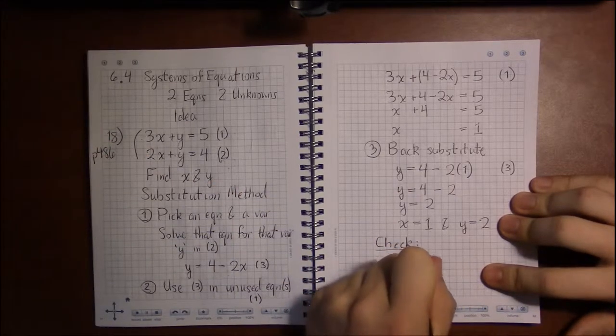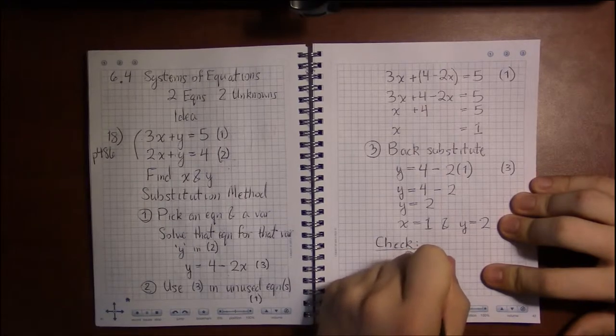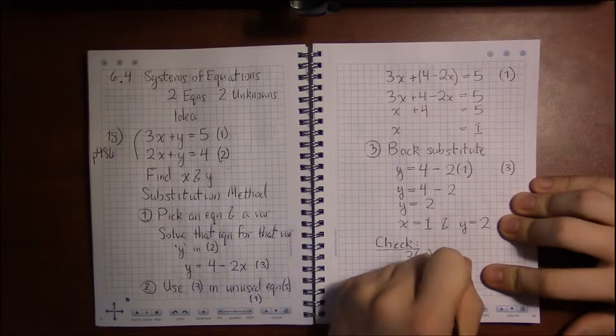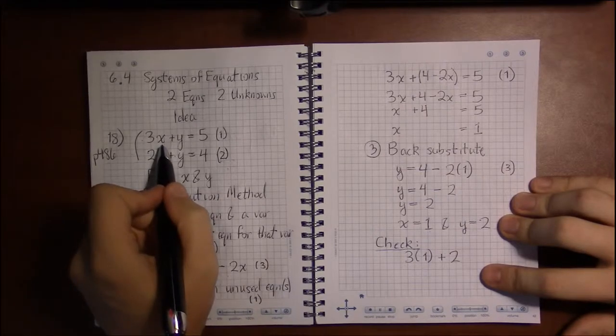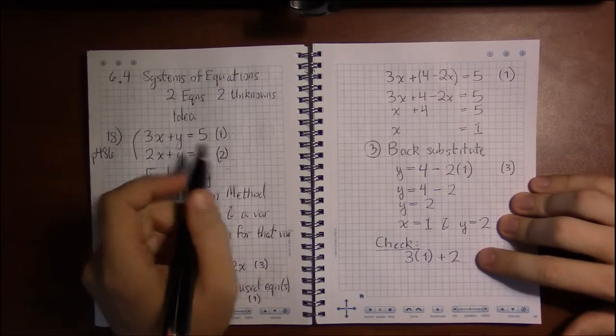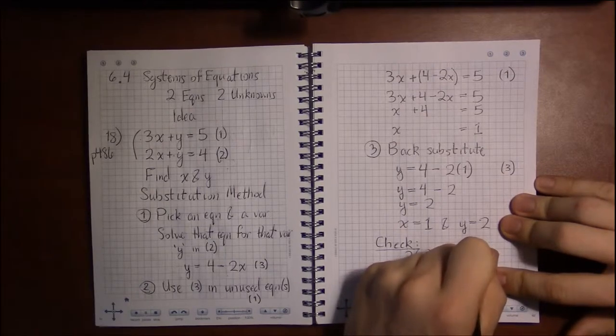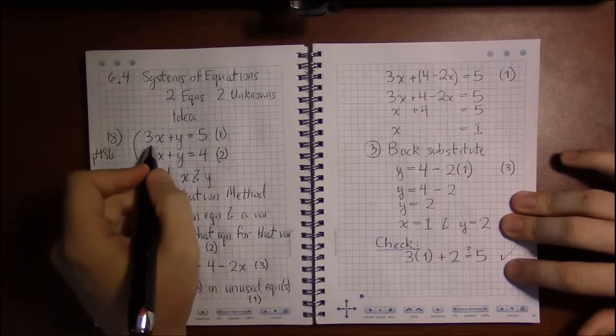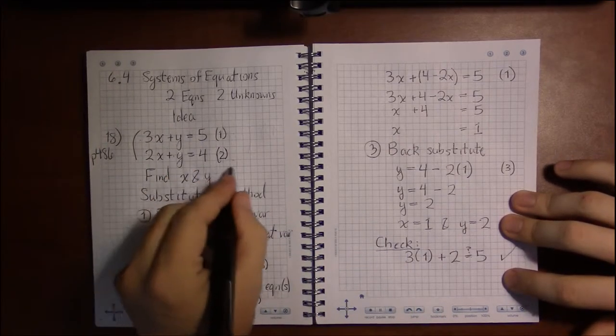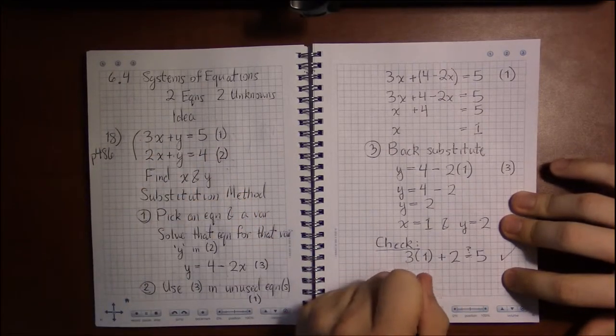So is it the case that three times one plus two, so instead of three times x, it's three times one, and instead of plus y, it's now plus two, is this equal to five? Well, yeah, yeah it is. So far so good. But we also need equation two to be true as well.